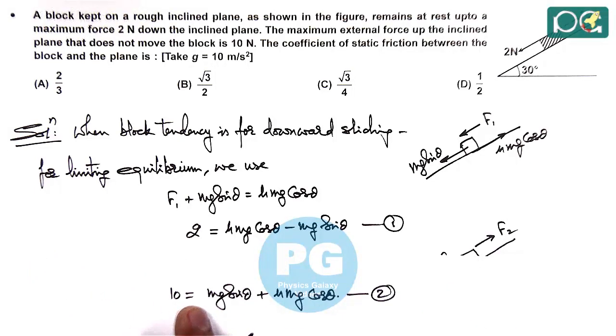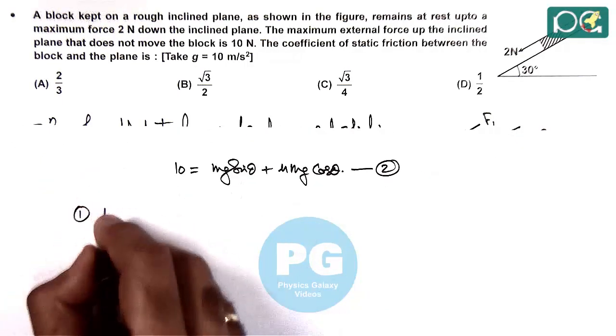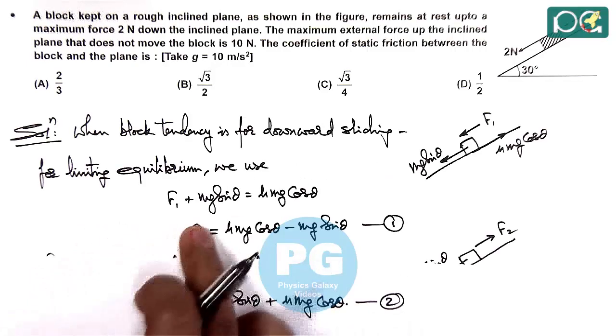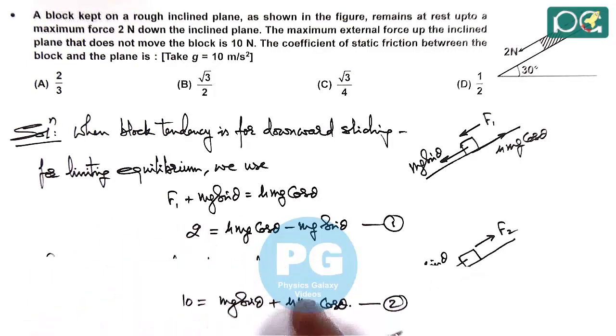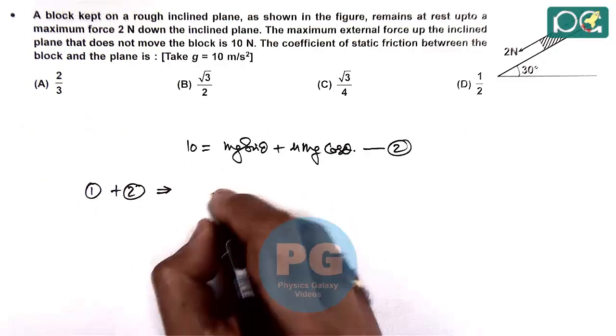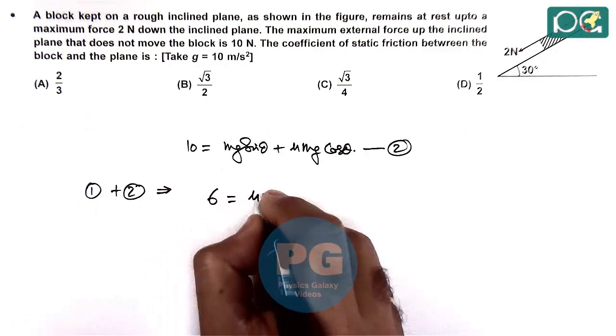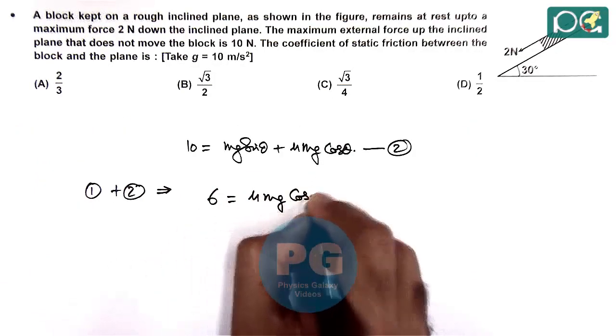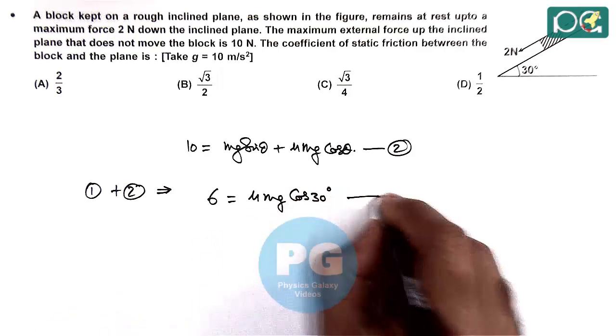Now we can add and subtract the two equations to find the values of Mg sin θ and Mg cos θ. Adding equations 1 and 2 gives 12 = 2μ Mg cos θ, which simplifies to 6 = μ Mg cos 30°. This is equation 3.